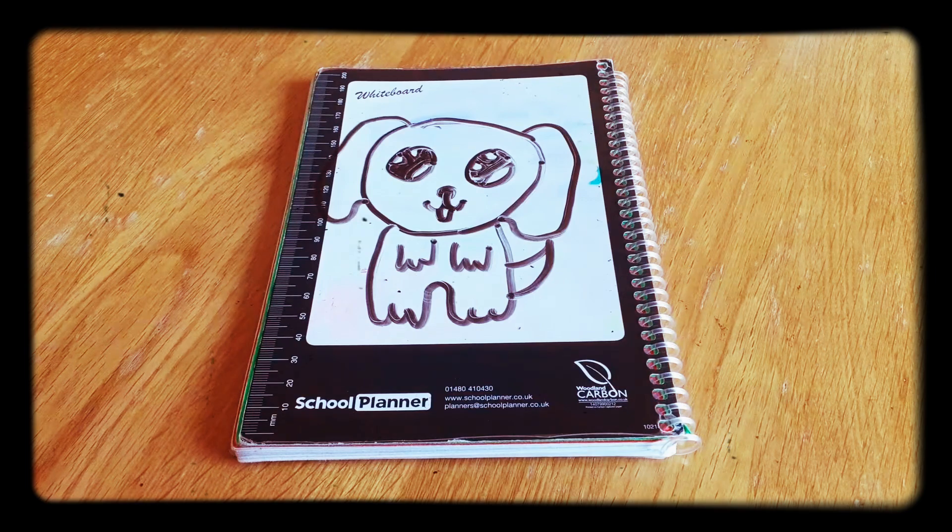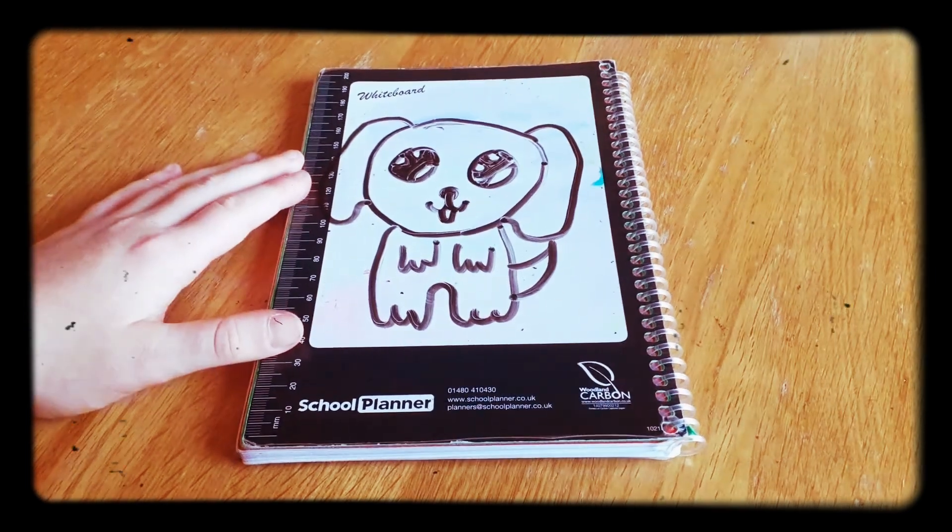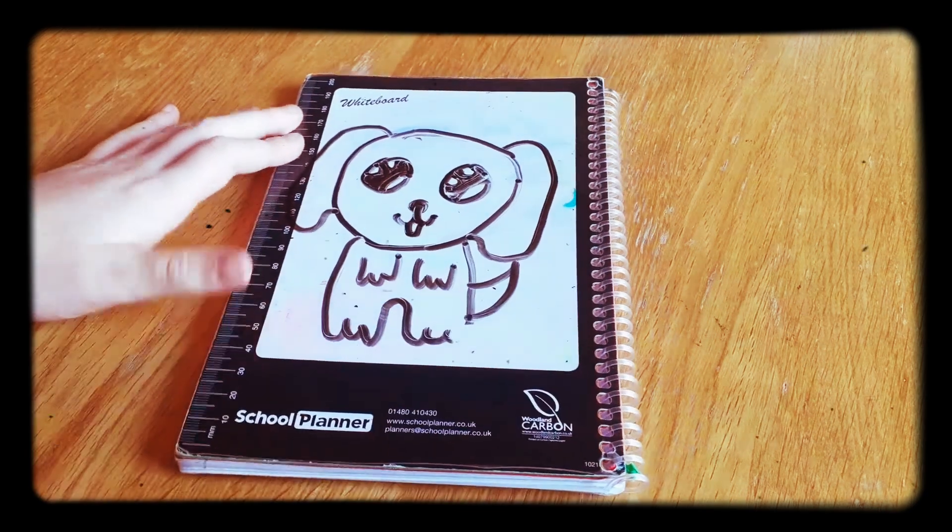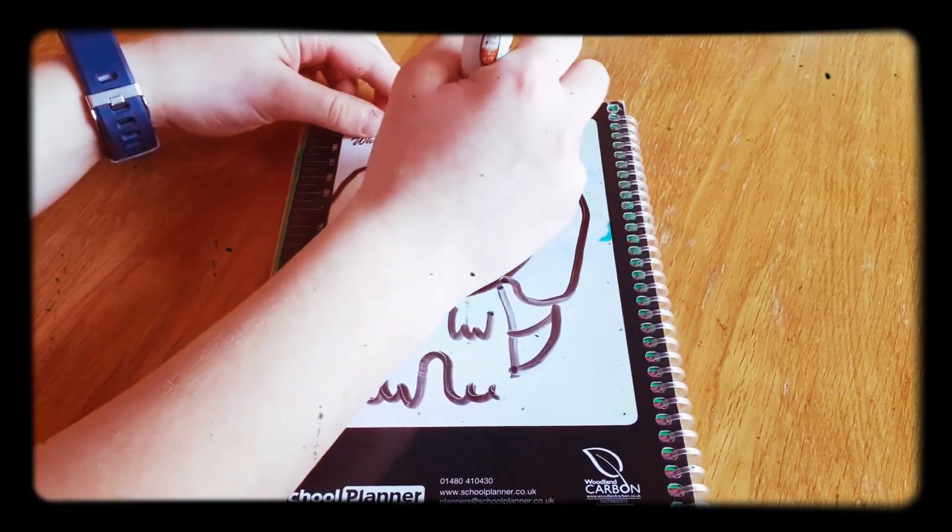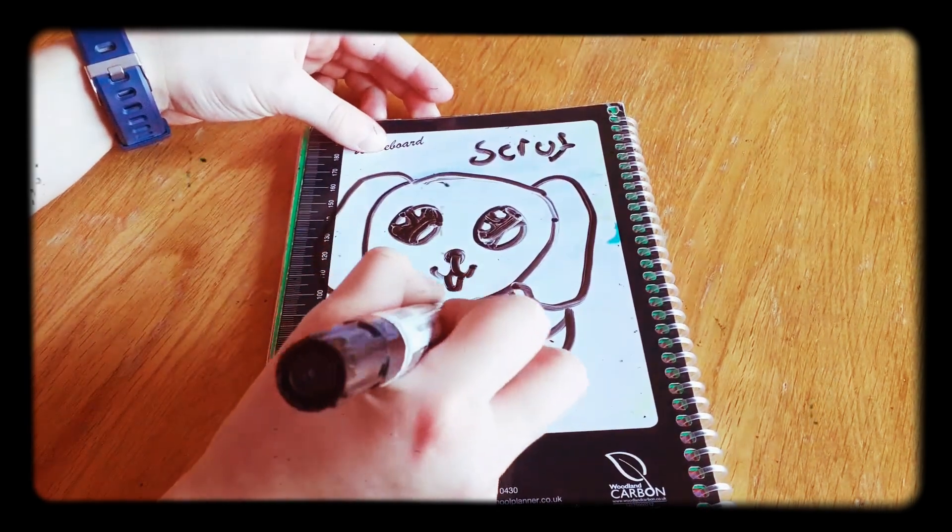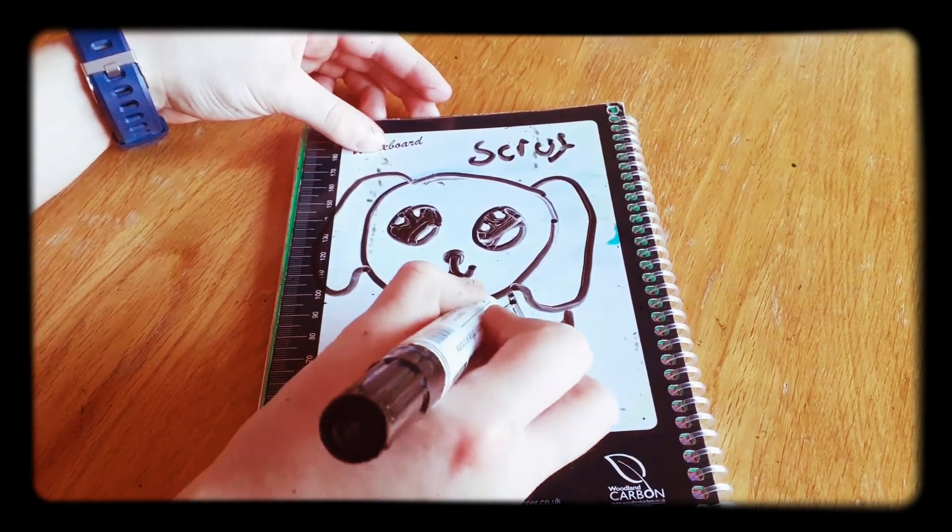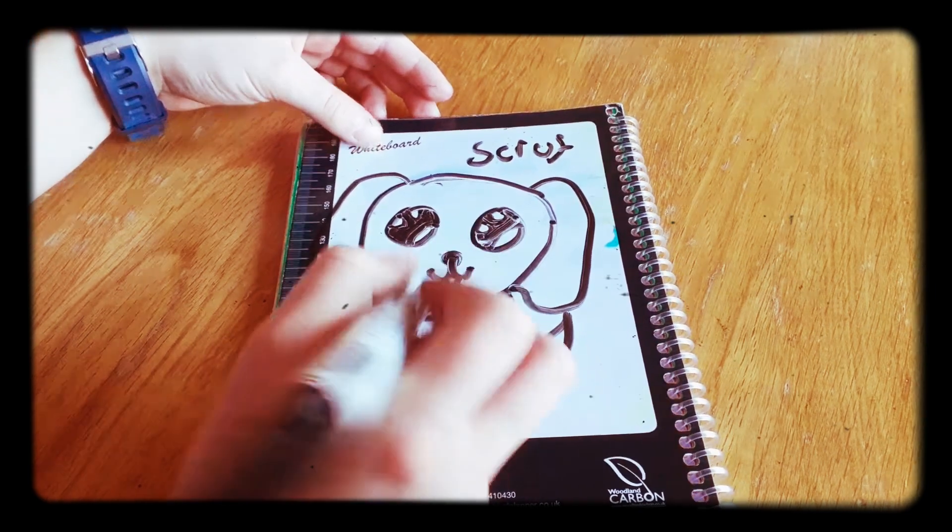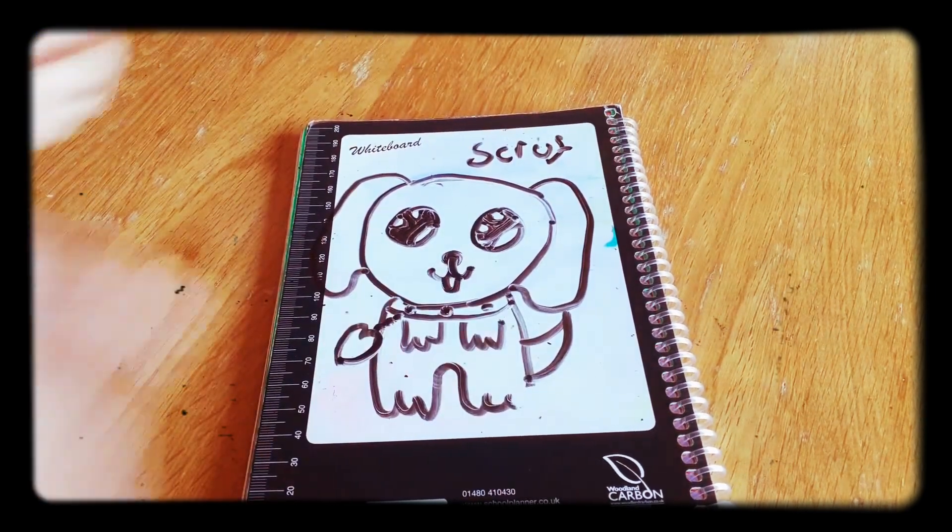Right, so this is my puppy. It's not too good because I had to rush it, but I'll be going through step by step to show you how to do it. I'm going to call him Scruff. So just to personalize him, give him a collar, a little chain with his name on. I'm gonna do S for Scruff.